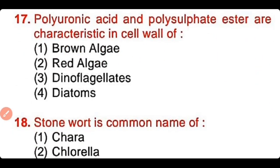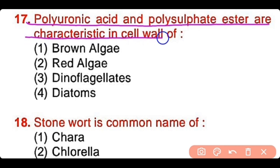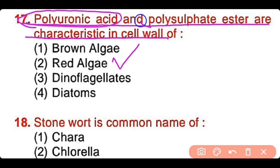Question number 17: Polyuronic acid and polysulphate esters are characteristic in the cell wall of brown algae, red algae, dinoflagellates, or diatoms? The correct answer is option 2. Red algae have polyuronic acid as well as polysulphate esters in the cell wall.